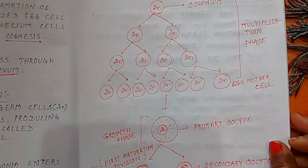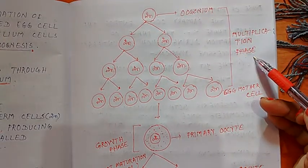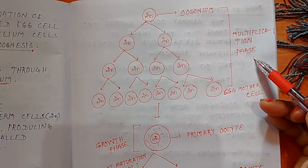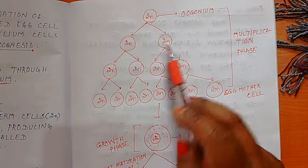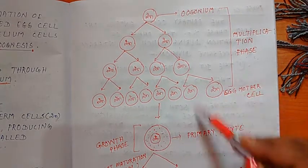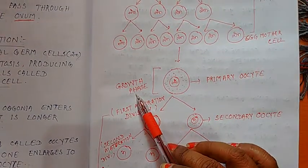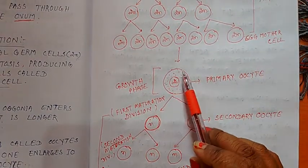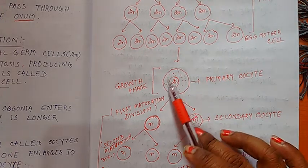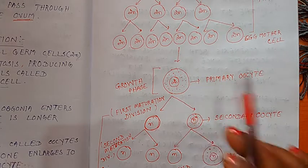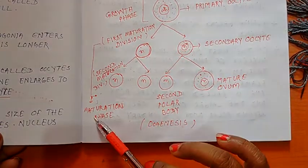This is the diagram of oogenesis, where the ovum cells undergo the multiplication phase, which is a mitotic cell division, to form a number of egg mother cells or oogonia — first two, then four, then eight, and so on. The egg mother cells or oogonia then enter into the second phase, that is the growth phase, where the oogonia become primary oocytes. The primary oocyte is somewhat larger than the egg mother cells.